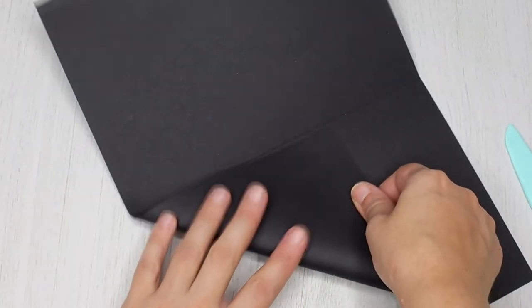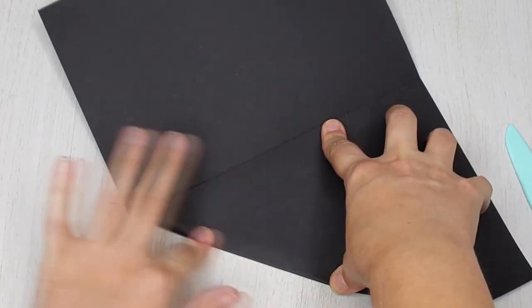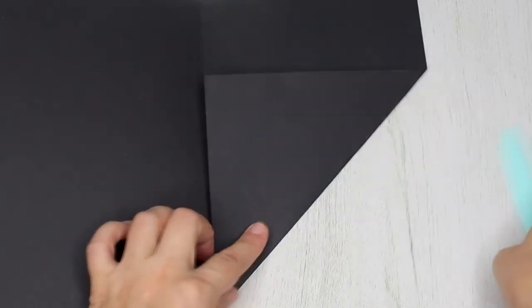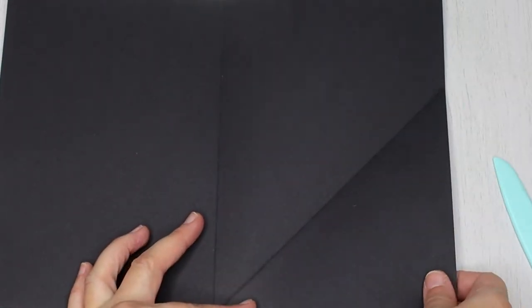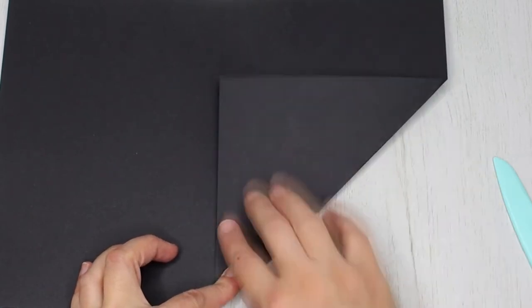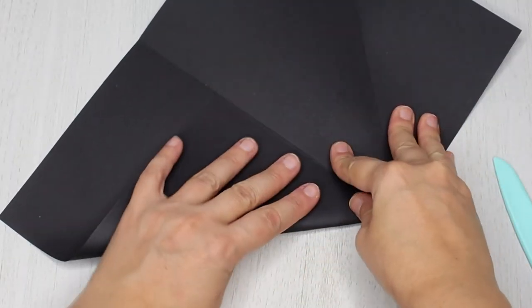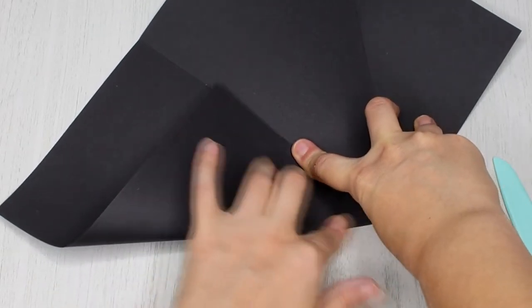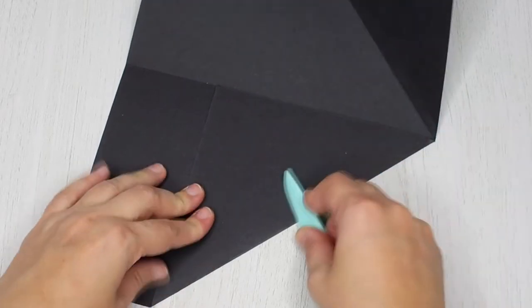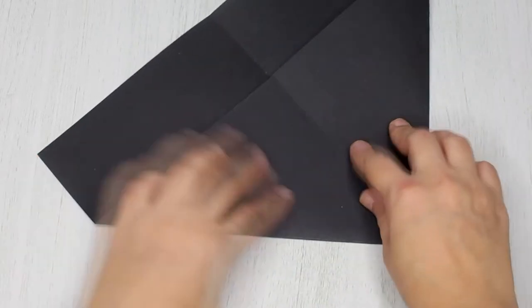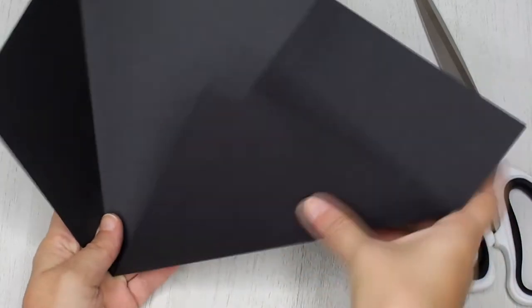Then bring the corners towards the center fold line. After folding the paper, cut the sheet of paper in half, taking the center fold as the guide.